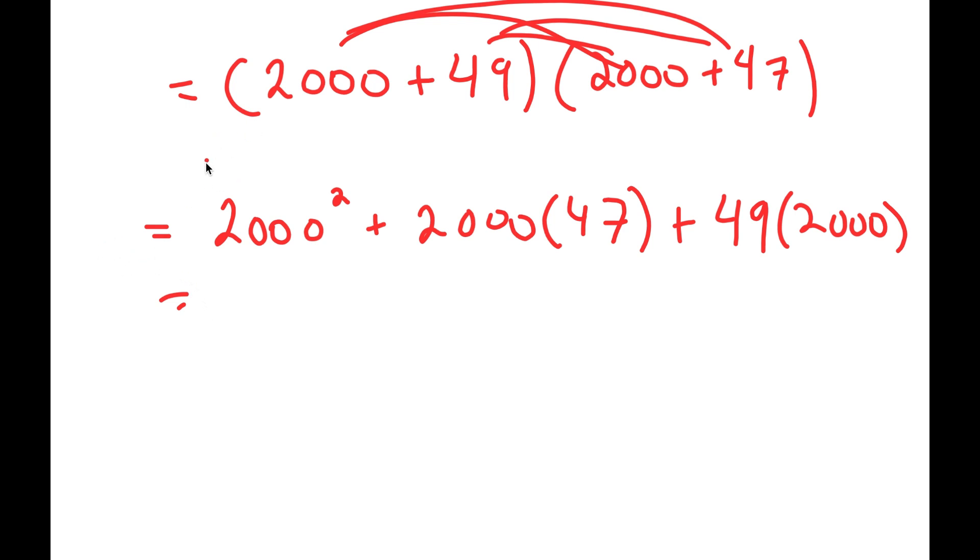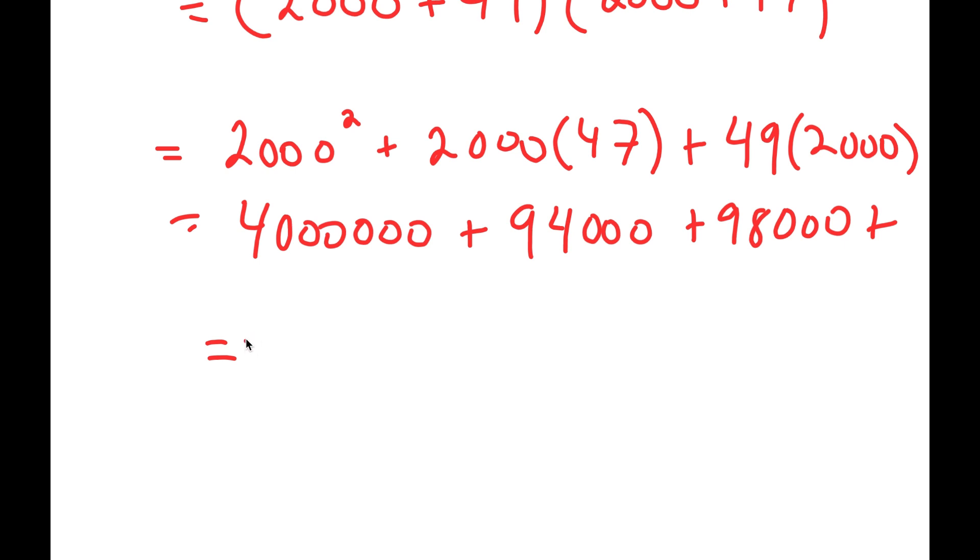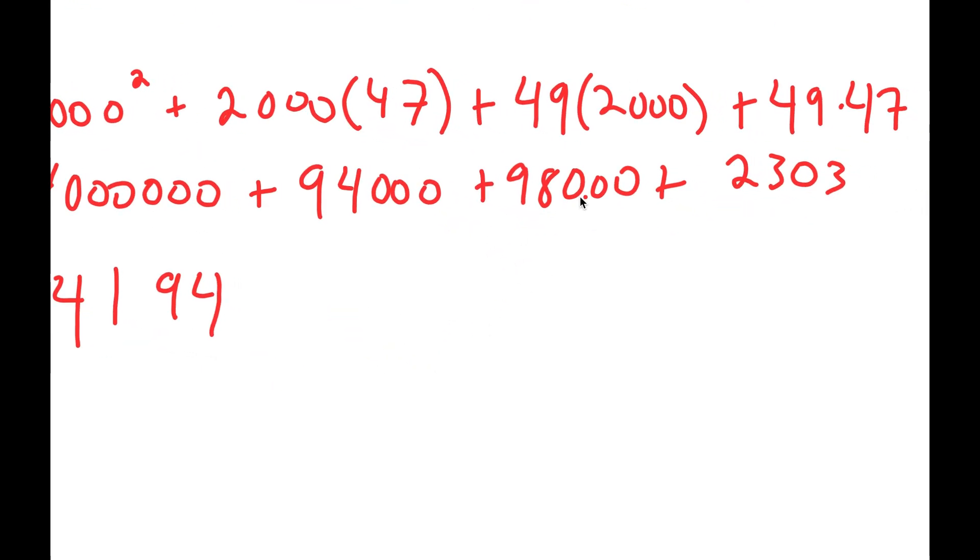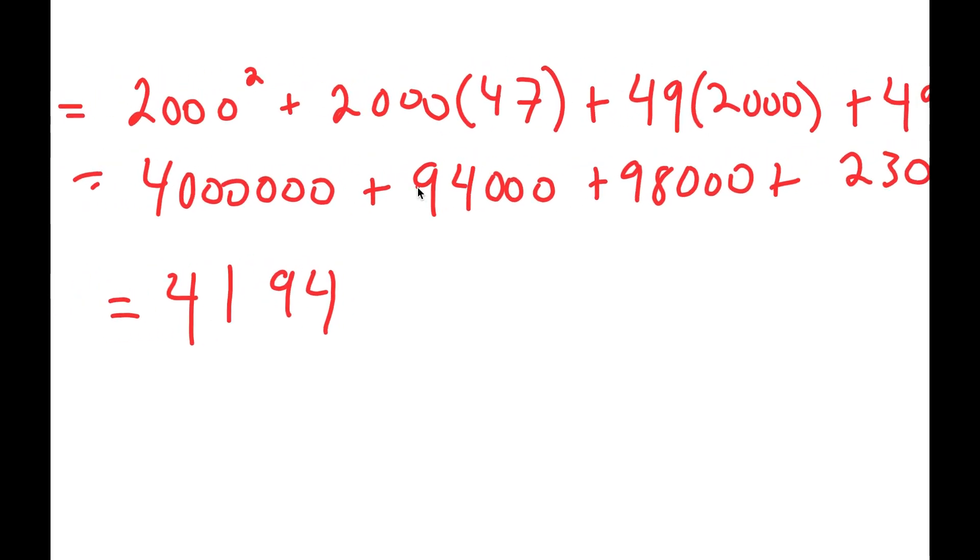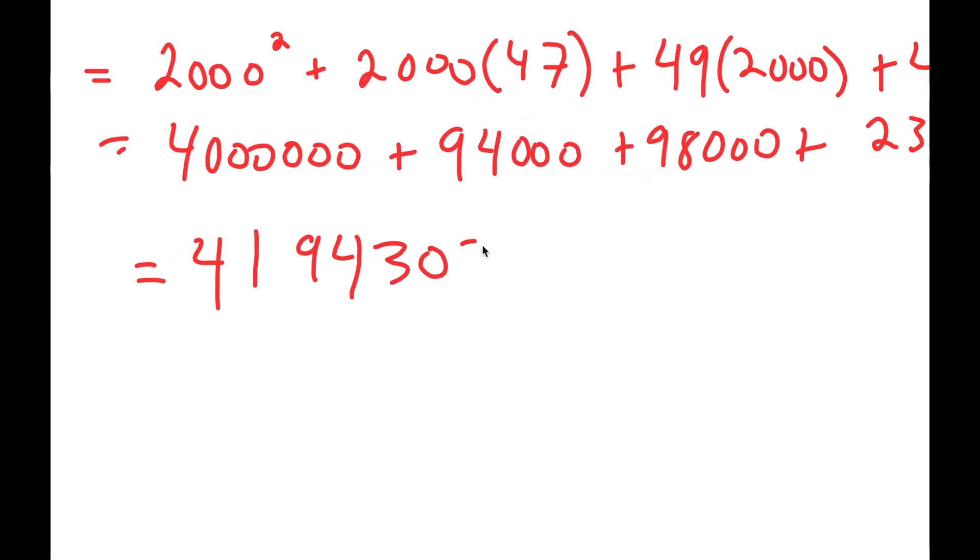Now, 2000 squared is going to be 4 million, plus 47 times 2000 is 94,000, plus 49 times 2000 is 98,000, and finally, 49 times 47 is 2303. So, by adding all these up, I get 4,000, 194,000, because 94,000 plus 98,000 is 194,000. And then, I have to add in the 2,303, so now, I get 303 at the end.